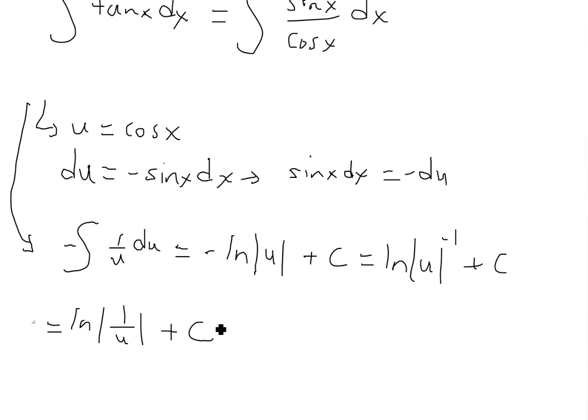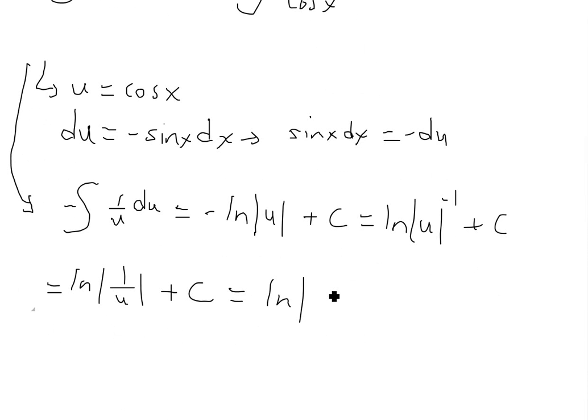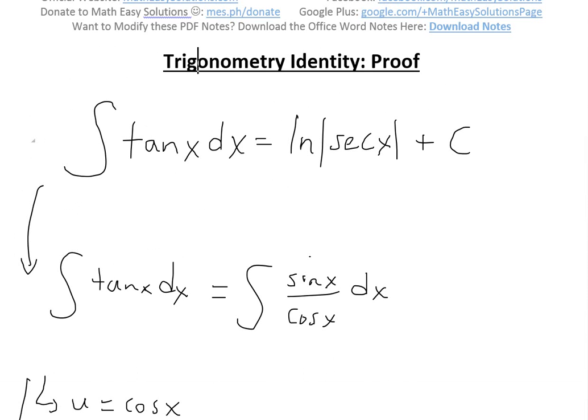And the reason we have this is once we plug in the cos of x back inside, we'll get ln of absolute value 1 over cos of x plus C. And then this obviously is by definition equal to secant of x. So we'll just write that down right here, secant of x plus C. And there is our answer, and that's basically this identity.